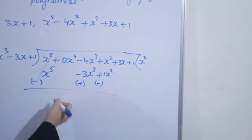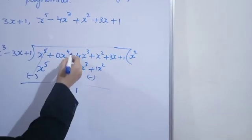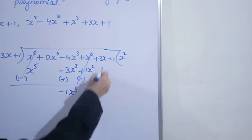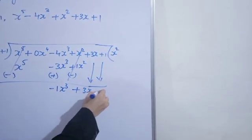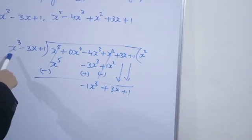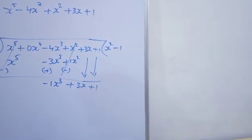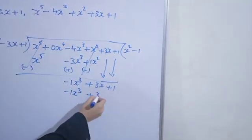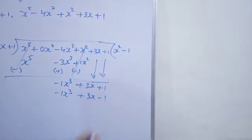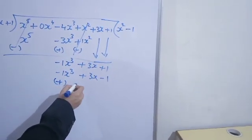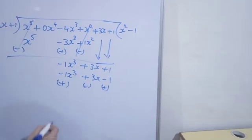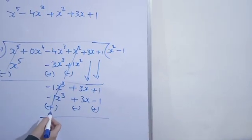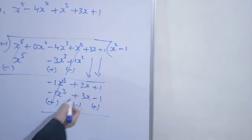Yahaan pe 0x⁴ hai isliye consider karenge. 4 plus 3, to minus karenge. Plus into minus hai, minus karenge. Jo bada number hai uska sign le lenge. Yahaan pe plus 1x² minus 1x² cancel ho jayega. Plus 3x plus 1. So now x³ chahiye, minus 1 le lenge. Minus 1 into x³ = minus 1x³. Minus into minus = plus 3x into 1 = 3x. Plus into minus = minus 1. Sign change. False term cancel. Plus 1x³ minus 1x³ cancel, this one also cancel.